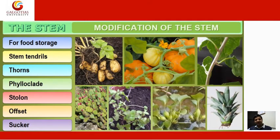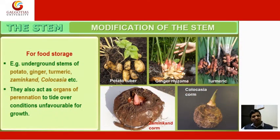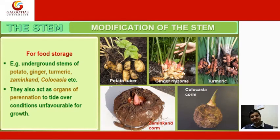Modifications of the stem include stem tendrils, thorns, phylloclades, stolons, offsets, and suckers. For food storage, underground stems of potato, ginger, turmeric, jimikand, and colocasia are used. They also act as organs of perennation to tide over conditions unfavourable for growth. Modified stems shown include potato tubers, ginger rhizomes, turmeric, jimikand, and colocasia.